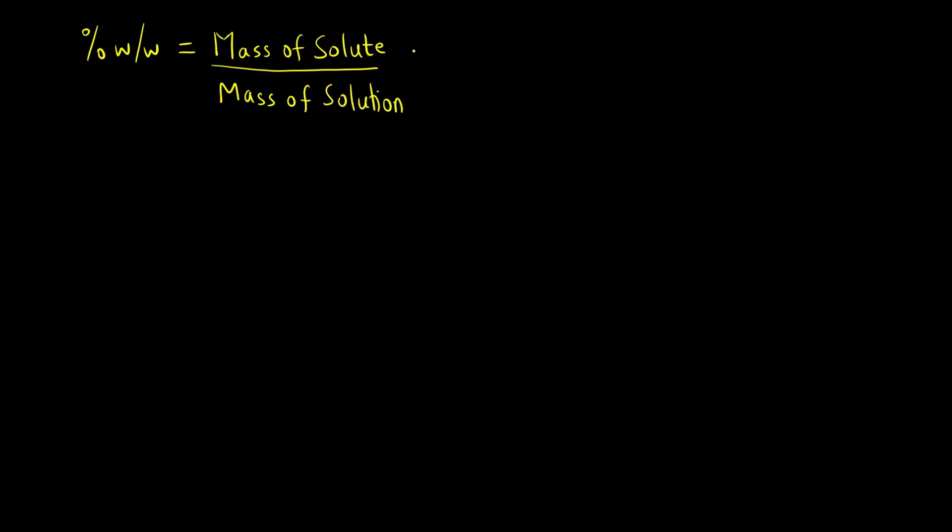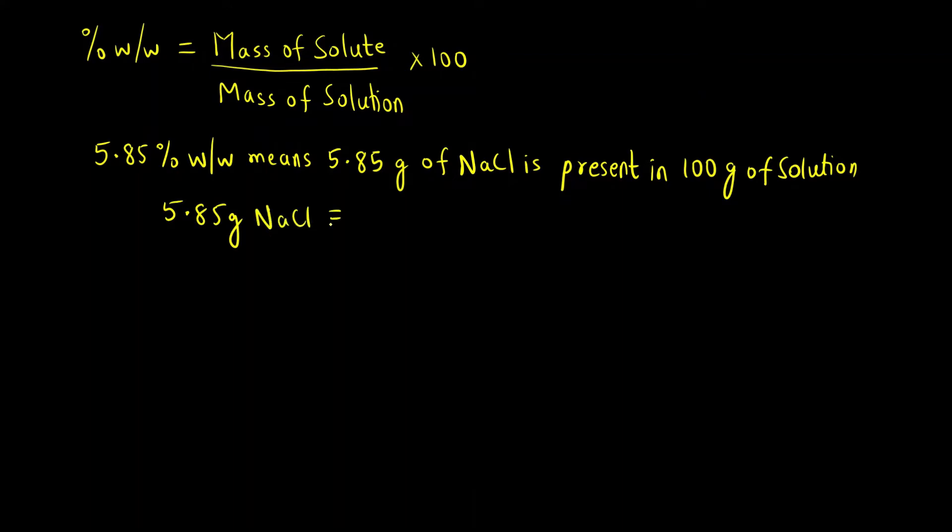So 5.85 percentage weight by weight solution means that 5.85 grams of NaCl is present in 100 grams of solution. 5.85 grams of NaCl is present in 100 grams of solution.